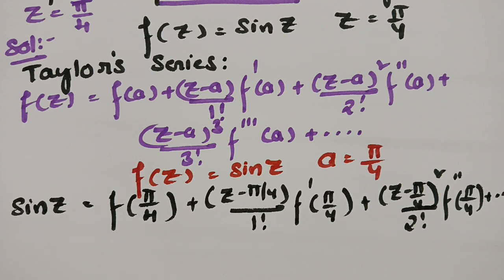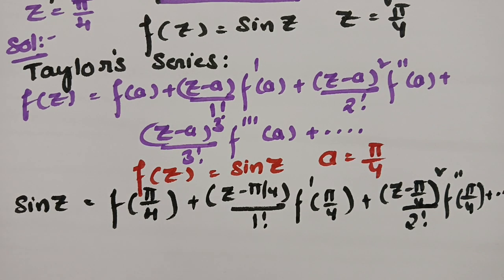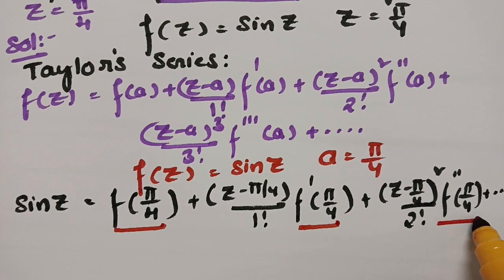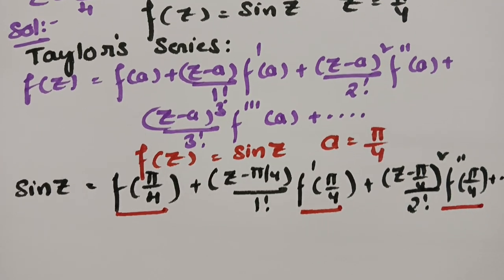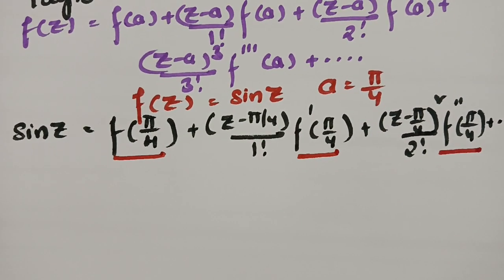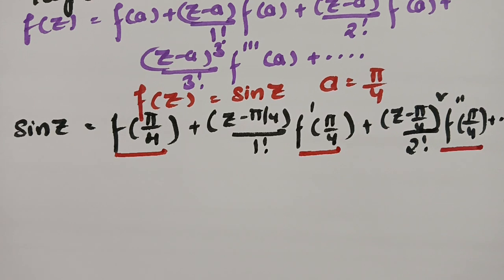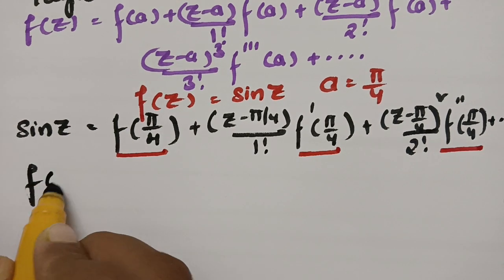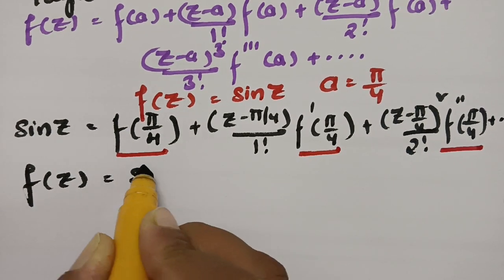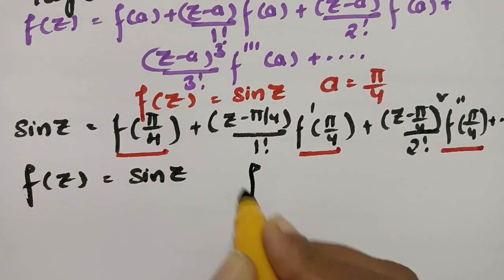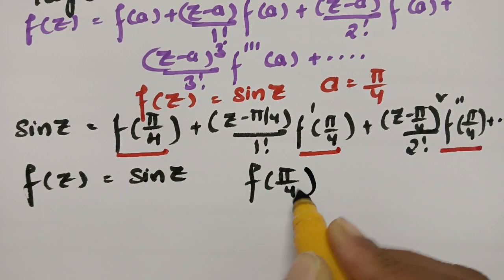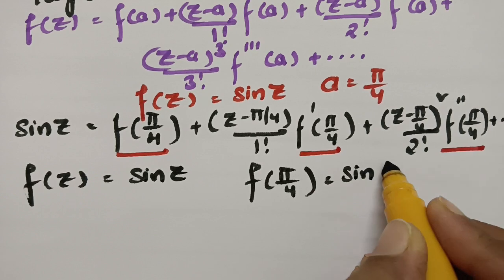Now I need the values of f(π/4), f'(π/4), f''(π/4), f'''(π/4), and so on. Our f(z) is given as sin(z), so f(π/4) is equal to sin(π/4).